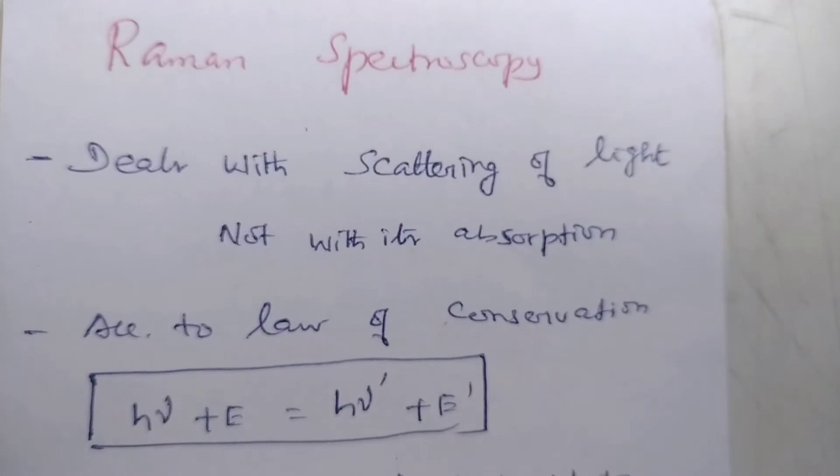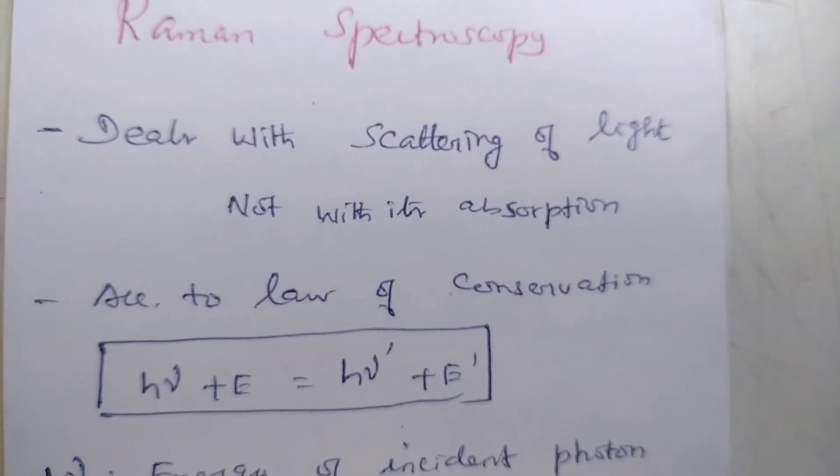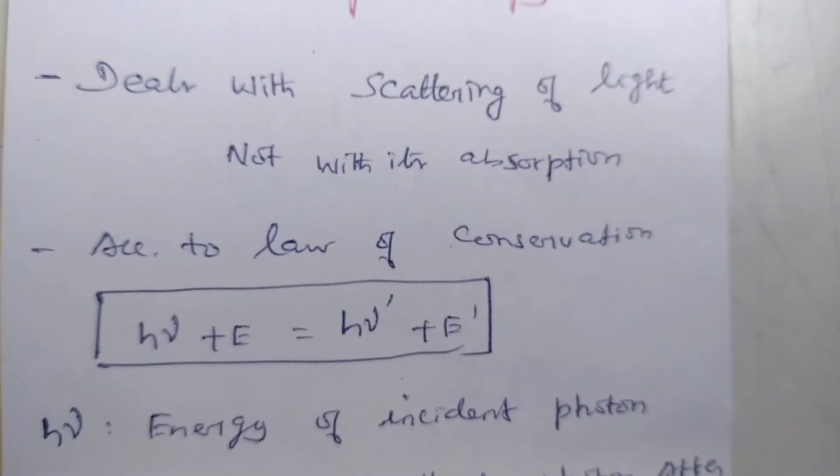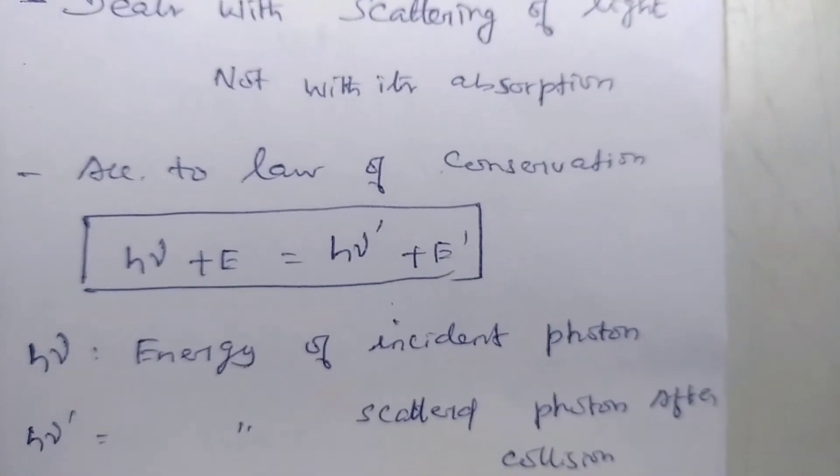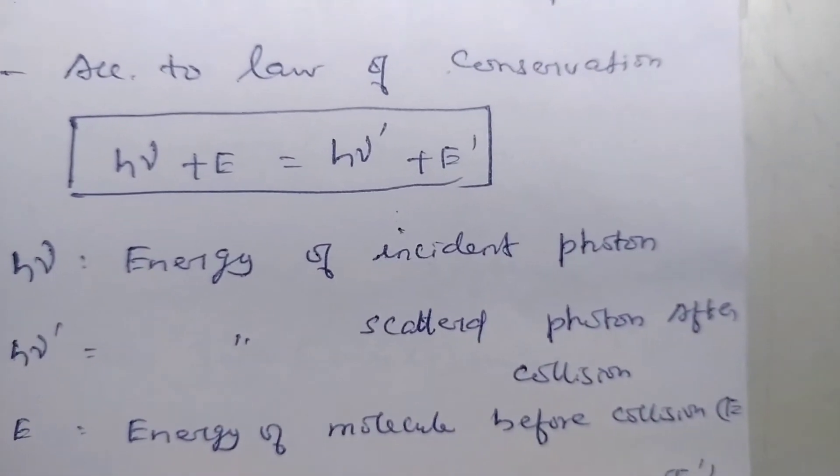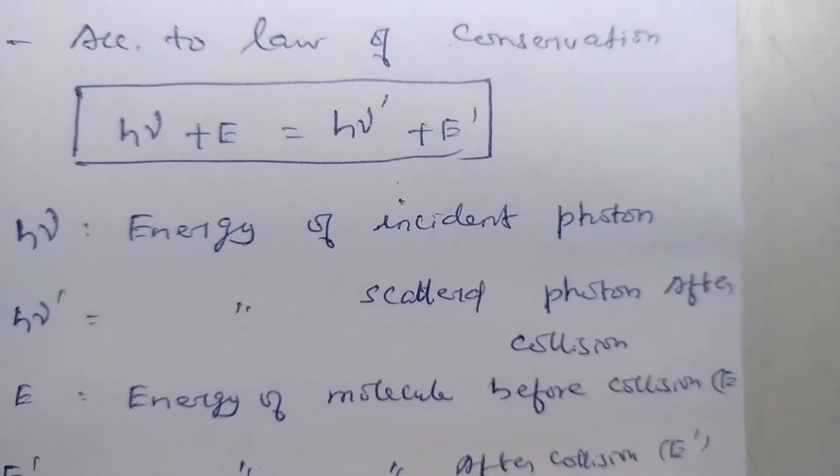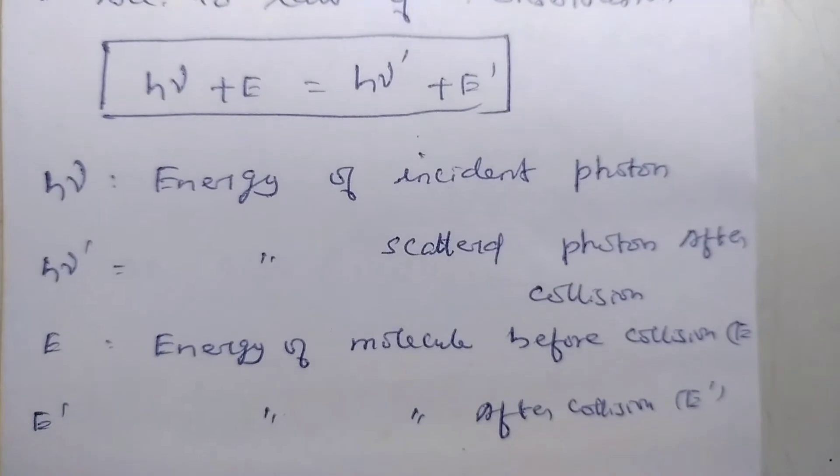According to the law of conservation, H nu plus E equals H nu prime plus E prime, where H nu is the energy of incident photon and H nu prime is energy of scattered photon after collision.